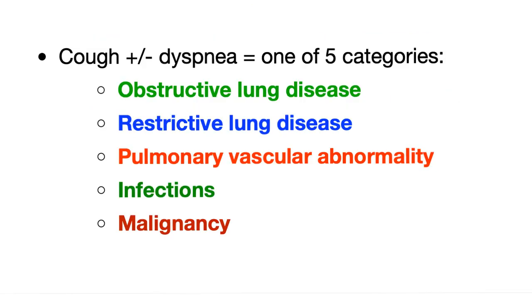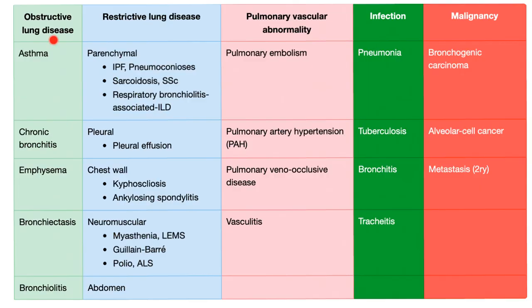This slide summarizes all of pulmonary medicine in one sentence: cough and/or dyspnea equals one of five categories — obstructive lung disease, restrictive lung disease, pulmonary vascular abnormalities, infection, or malignancy. Obstructive lung disease includes asthma, chronic bronchitis, emphysema, bronchiectasis, and bronchiolitis. Chronic bronchitis and emphysema together are called COPD.